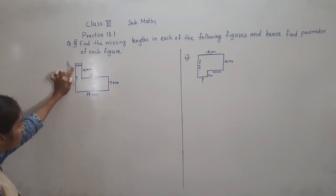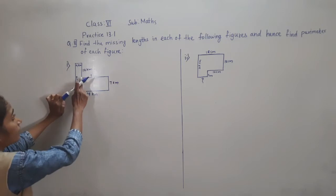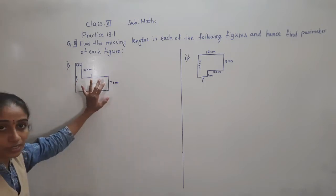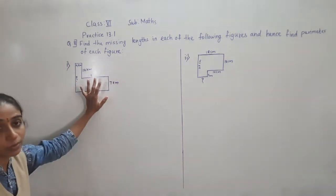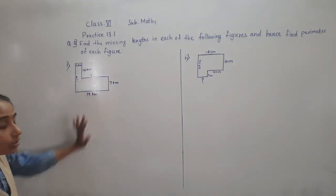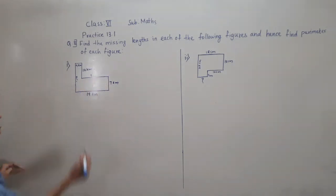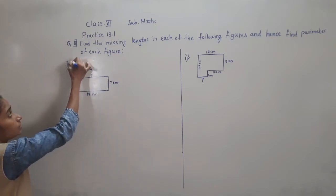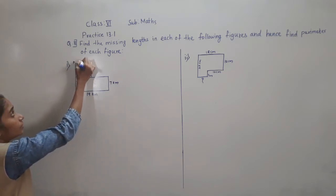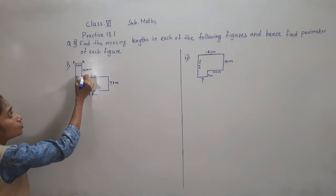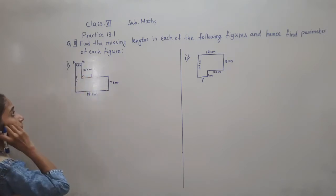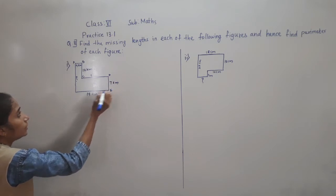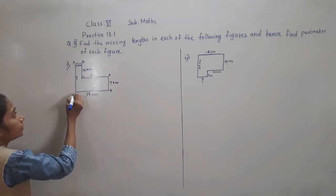Now which lengths are missing? This length we don't know and this length we don't know. So first we have to find these lengths, and then we can find the perimeter of this given figure. To find this length, I will label the points: A, B, C, D, E, F.